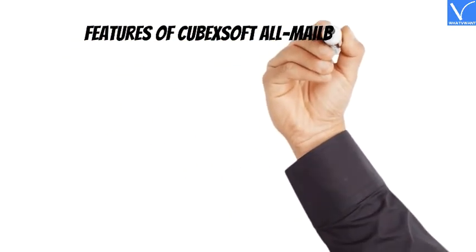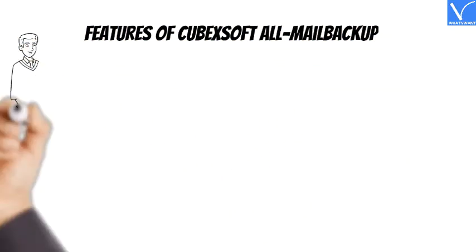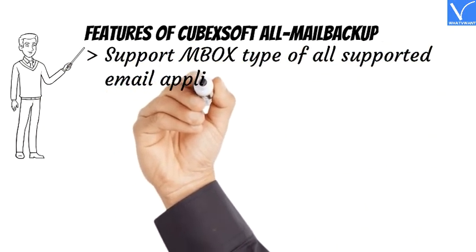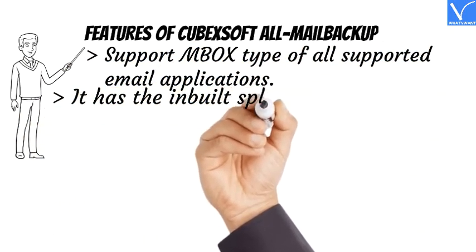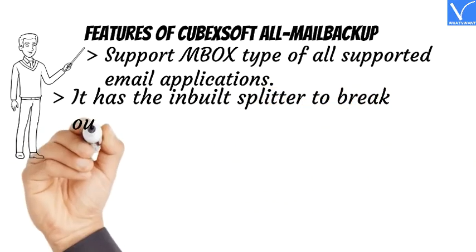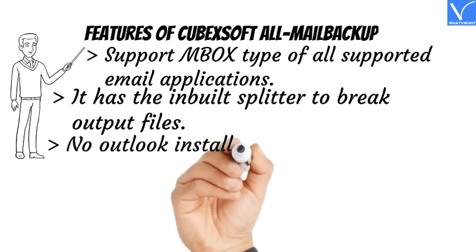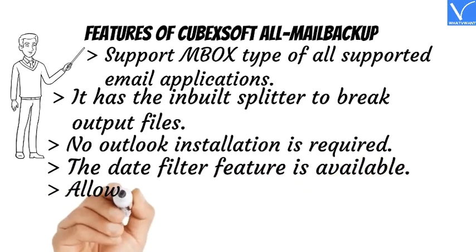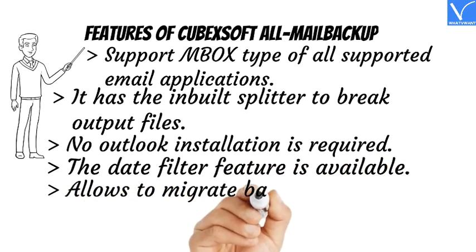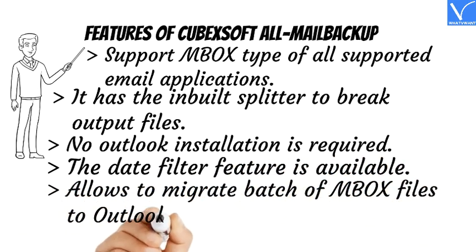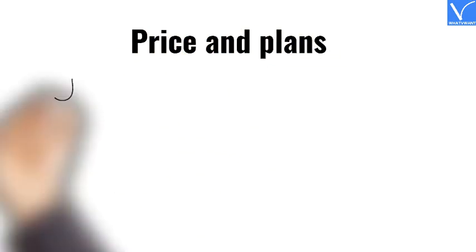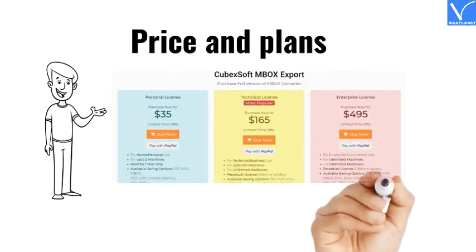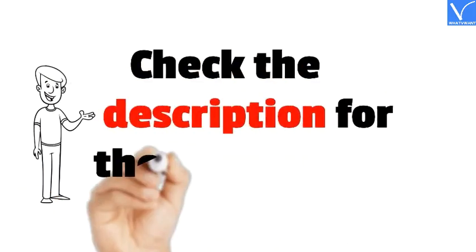Features of Cubex Soft All Mail Backup: Supports MBOX type from all supported email applications. Has a built-in splitter to break output files. No Outlook installation required. Date filter feature is available. Allows batch migration of MBOX files to Outlook. Check the description for the product link.